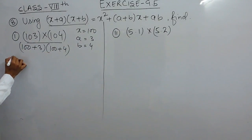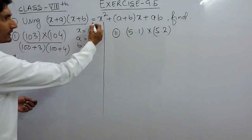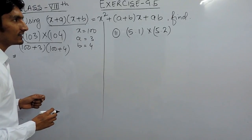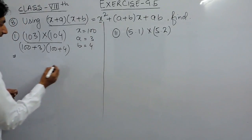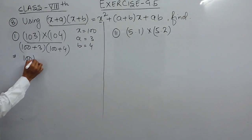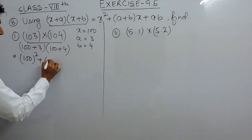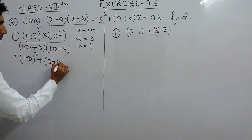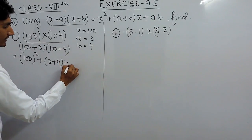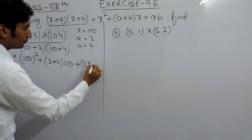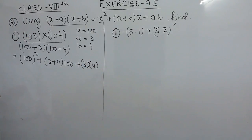Now, if you want to expand this, this can be expanded as x squared plus (a+b) into x plus ab. So, our x here is 100 squared plus our a here is 3 plus b here is 4 into x which is 100 and plus a into b which is 3 into 4.